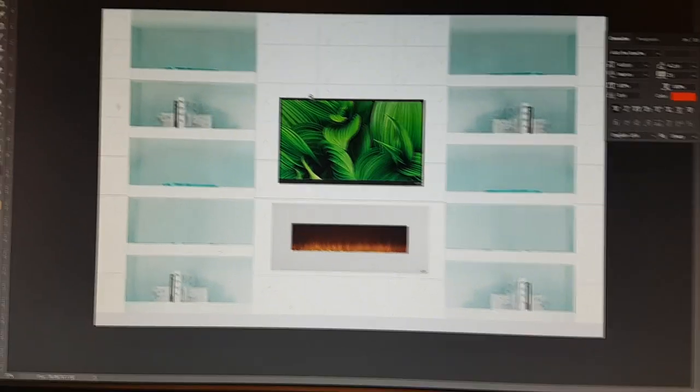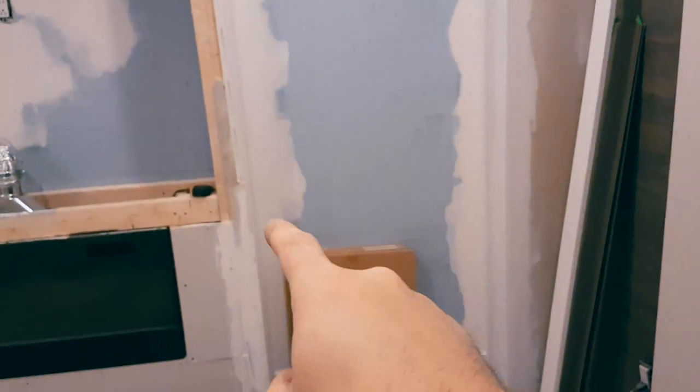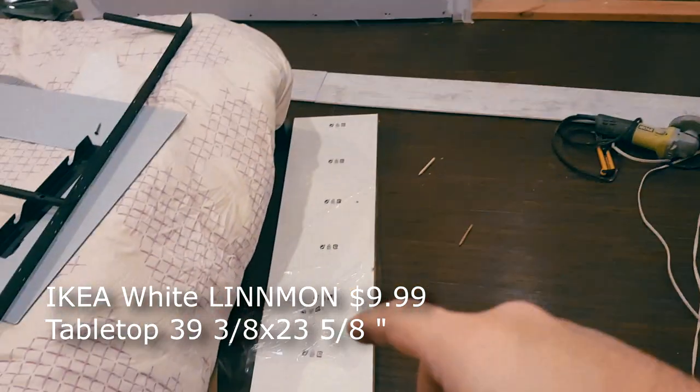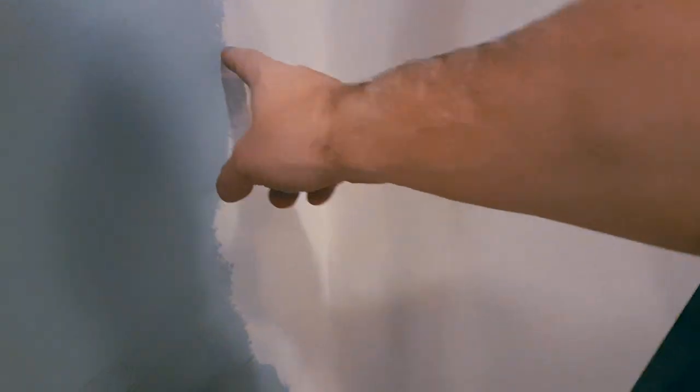Now we're putting one up there, two, three, four. And then here we're using a lineman because that's going to be a little wider than the shelf. This shelf is only 10 and a half or 11 inches. Here to here is almost 13 and a half.